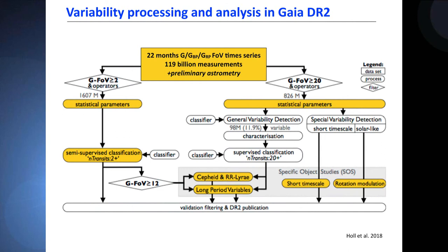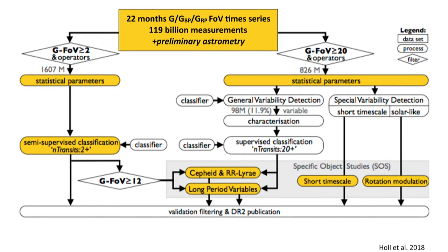We used two ways of performing the classification: one with at least two field of view transits, and one with 20 field of view transits. The 20 field of view transits covers the whole sky, and the two is the minimum to have multi-epoch data. After the classification, we transmitted the data to people who analyzed specific classes.